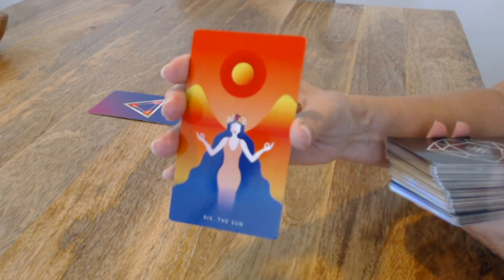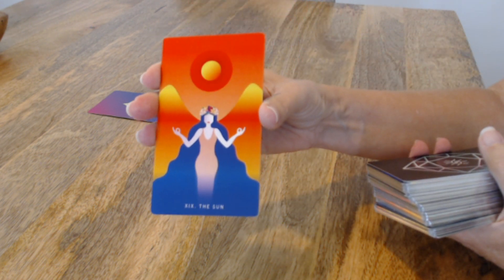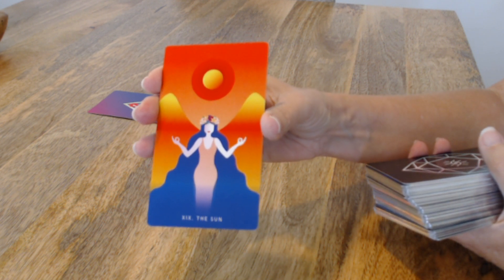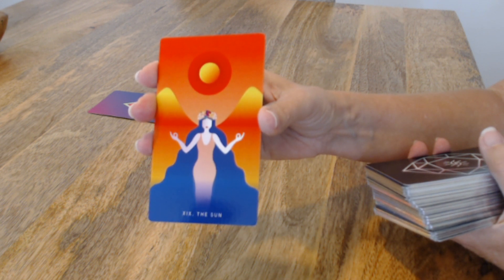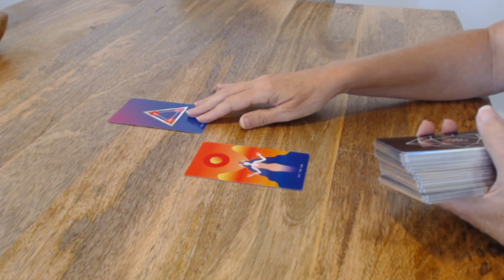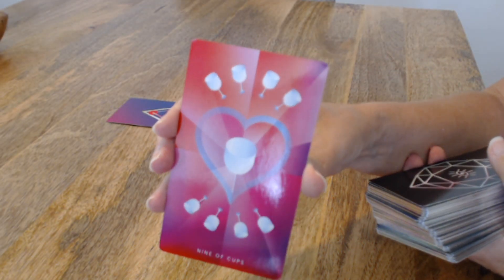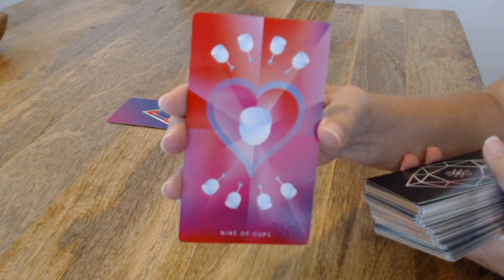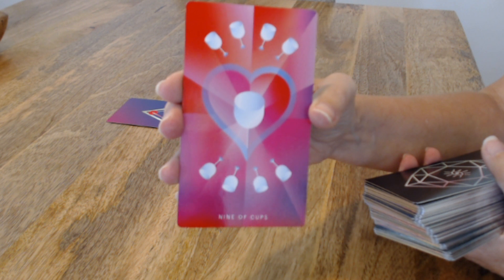First card is the sun. In the past there was clarity, there was a bright looking outcome. Right now, right now, a wish is coming true. If you're not feeling that right now, you will be shortly.